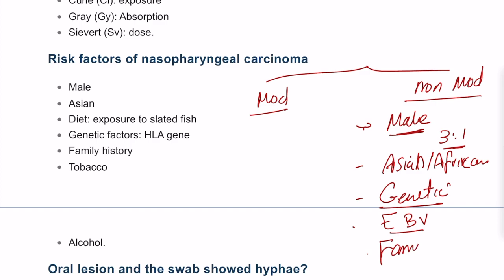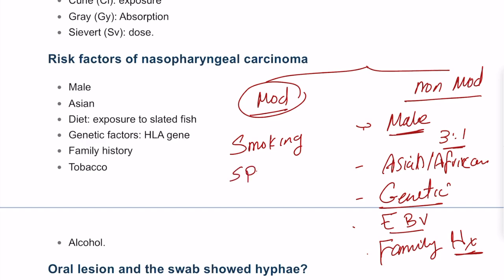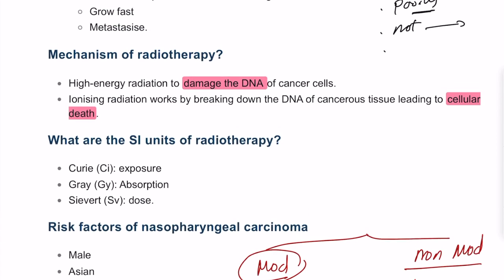Modifiable risk factors include the three S's: smoking, spirits (alcohol), and eating salted fish. Eating salted fish can increase the risk of developing nasopharyngeal carcinoma.